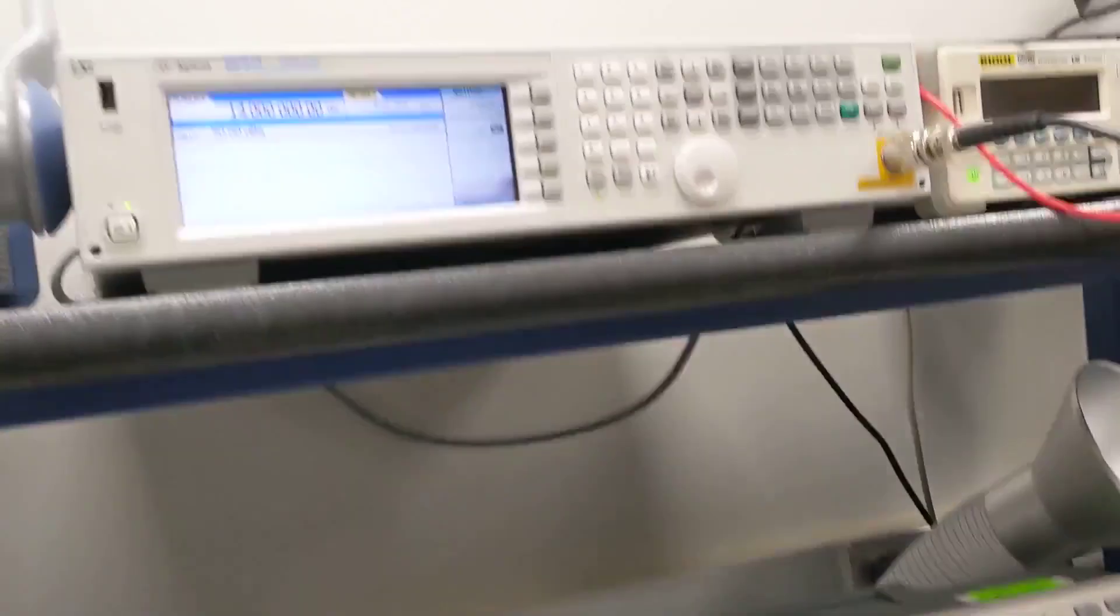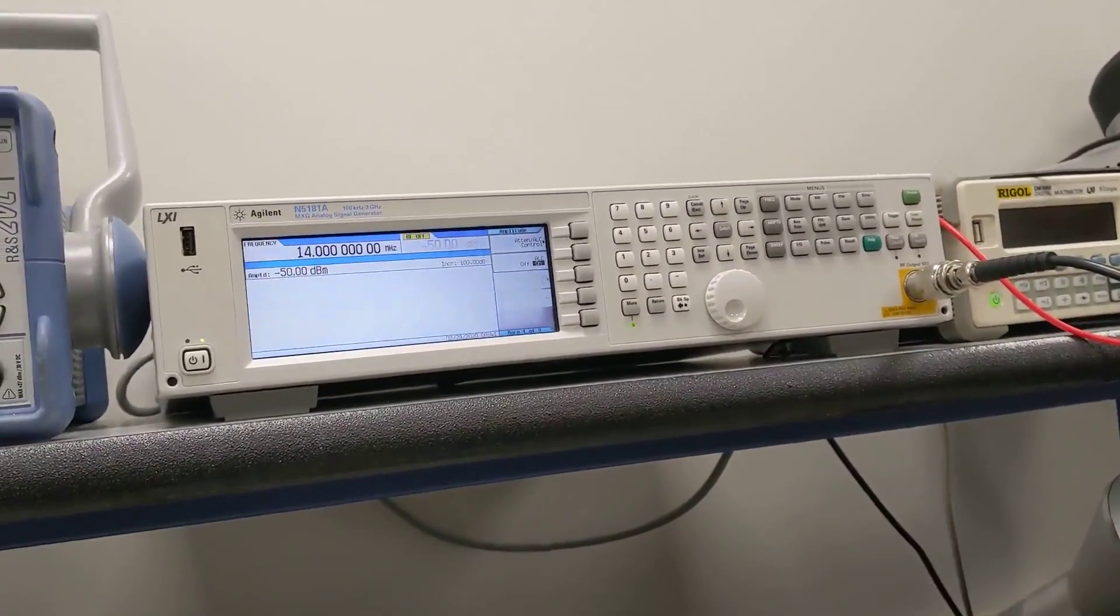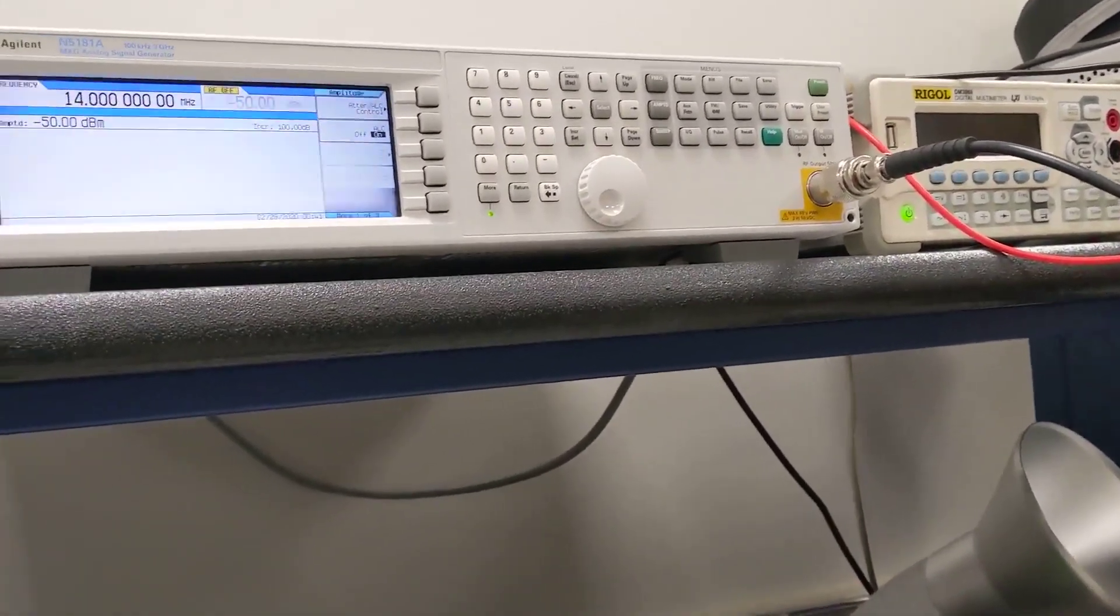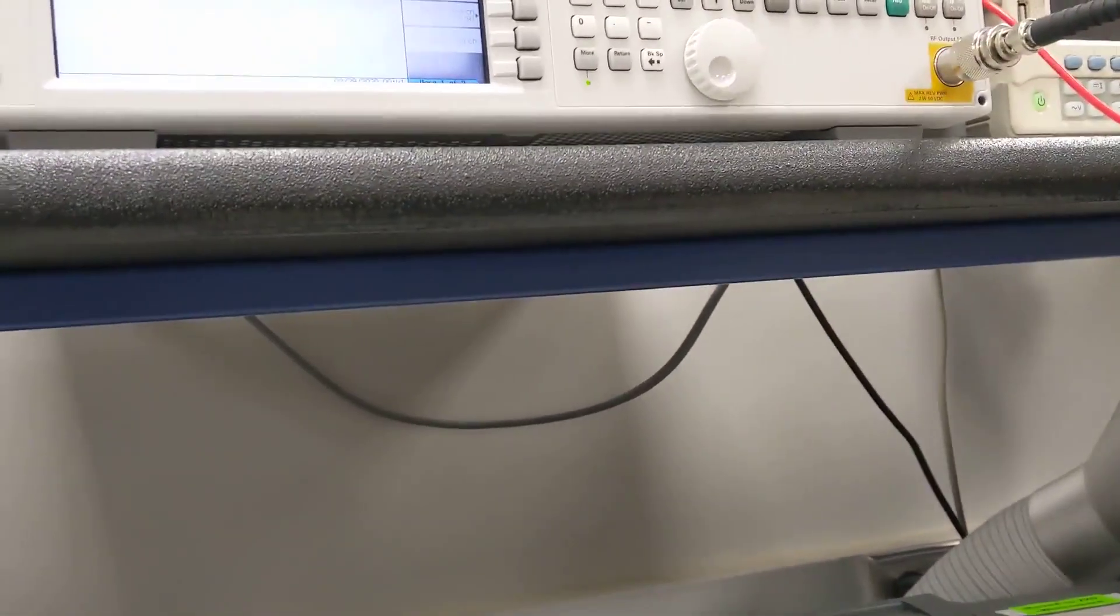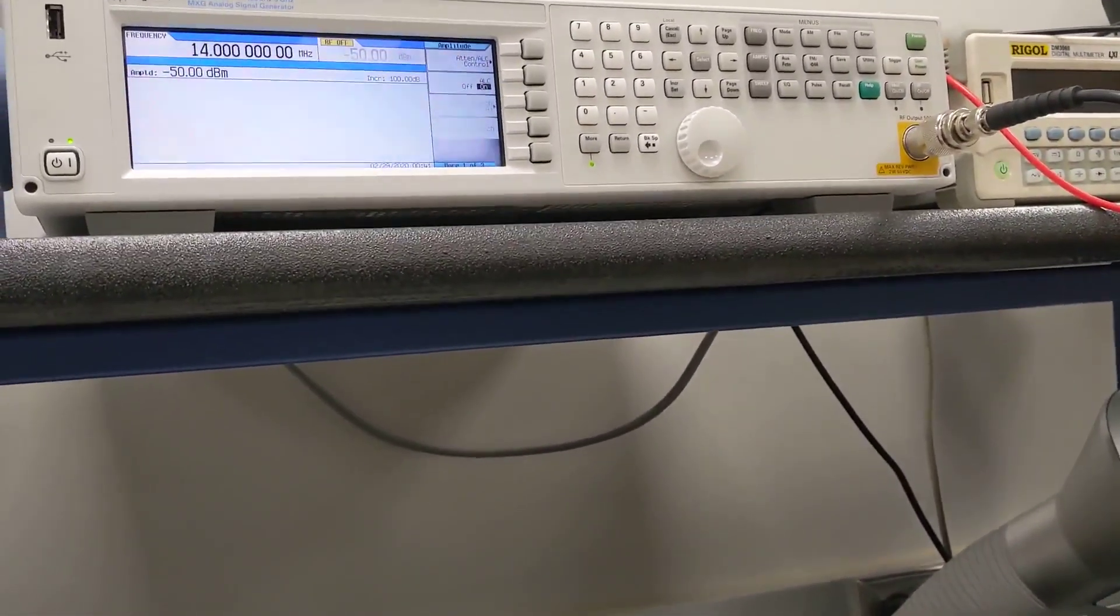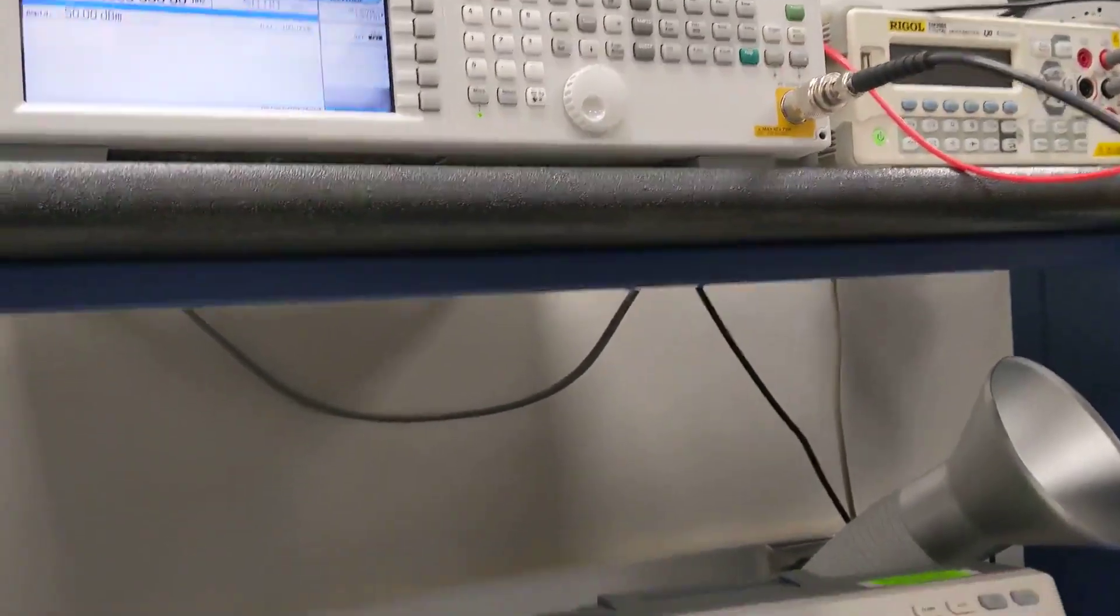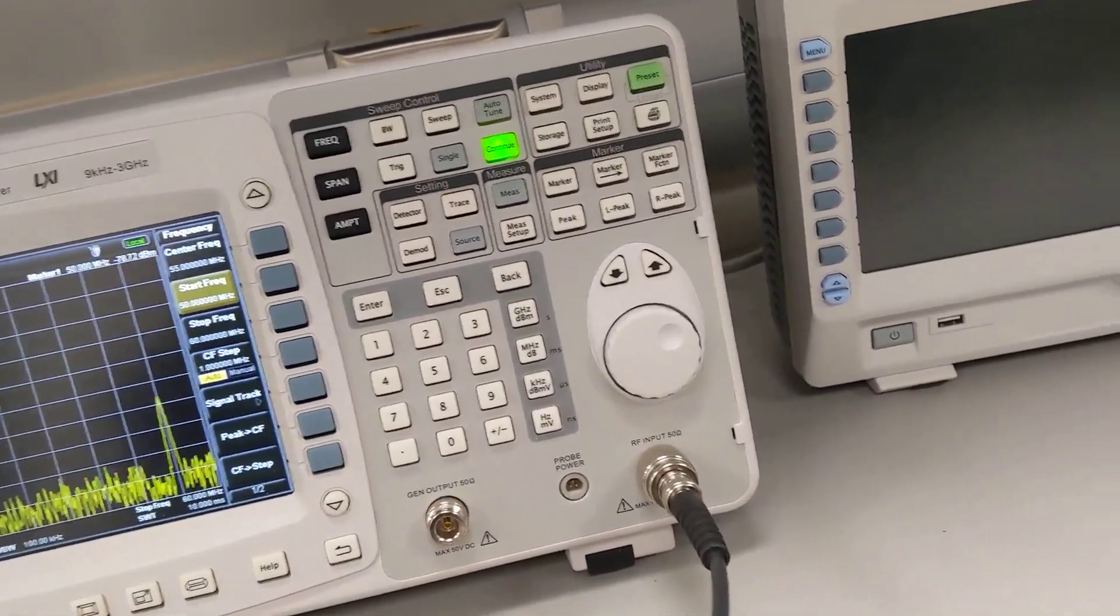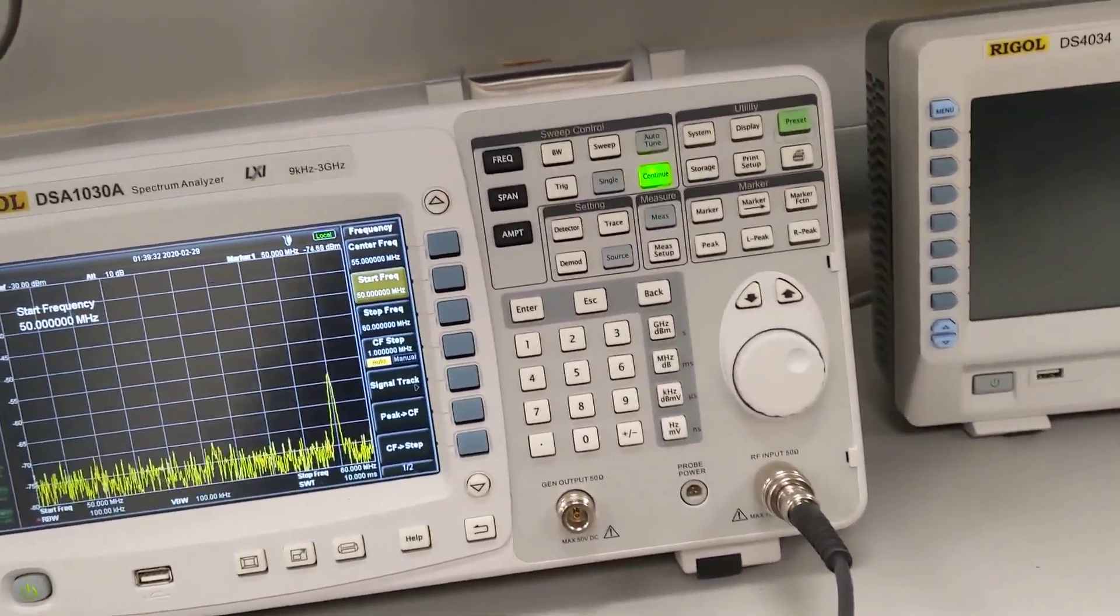So right now I have a function generator. I'm just doing a plain old signal carrier at 14 MHz because I've got this thing set for 20 meters. But right now I'm going to look at the signal. It's going to be kind of noisy because we're using a chip that creates a frequency.